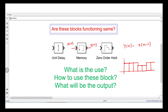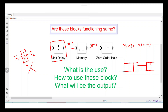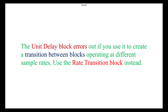One important thing to note when using the Unit Delay block: if you are using it between blocks with different sampling rates, it will give you an error. If two blocks have different sample times and you place the Unit Delay block in between, this will cause an error. Instead of using the Unit Delay block, use the Rate Transition block, which we have discussed in previous videos — the link is given in the description. The Unit Delay block errors out if used to create a transition between blocks operating at different sampling rates, so use the Rate Transition block instead.